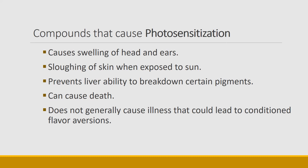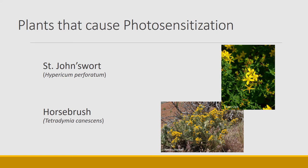Photosensitization can cause death in very high compound levels. It does not usually cause illness, so it is hard for animals to learn through conditioned aversions to avoid these photosensitive plants, and there's a long delay between eating the food and feeling the photosensitivity. A couple of plants important in causing photosensitization are St. John's wort — that's interesting because it affects horses more than others, and people are often quite concerned about it in horse pastures.